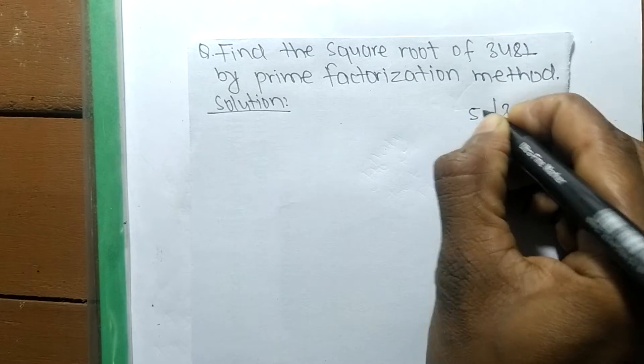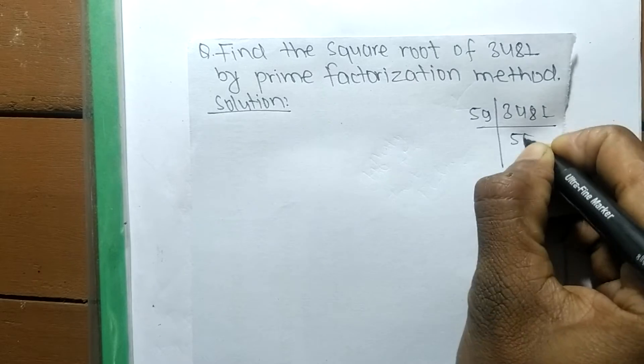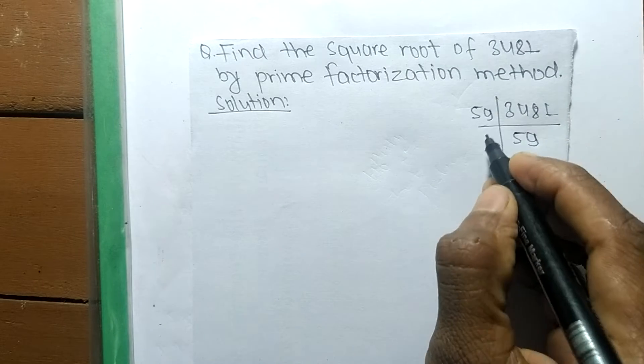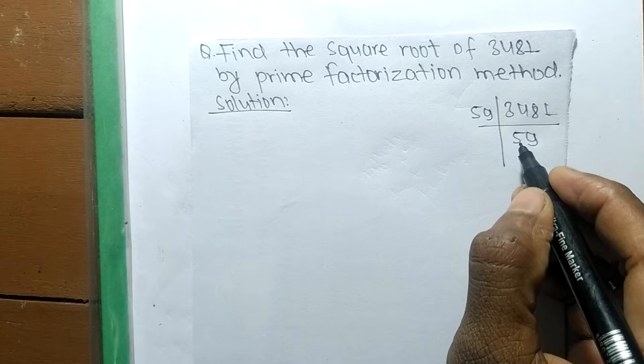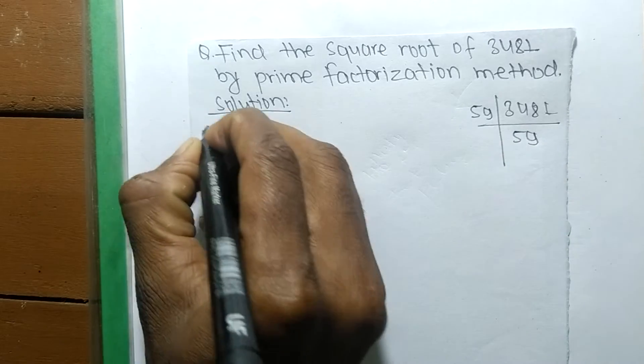The prime factors of 3481 are 59 times 59. So 59 and 59 are the prime factors of 3481.